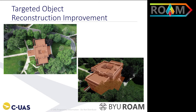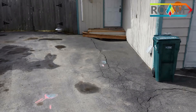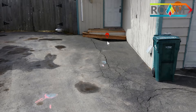For year one, we proposed to focus on proof of concept by using controlled simulation and progressive additions to the current flight path optimization algorithms to focus on desired 3D objects in a scene. Year two, we proposed to begin controlled field testing, and then year three, rigorous field tests and controlled field comparisons.